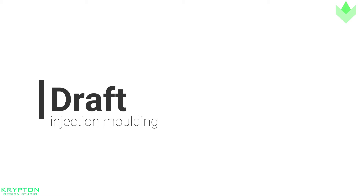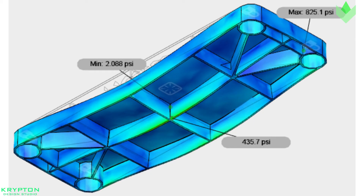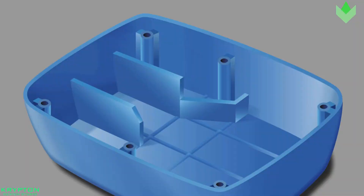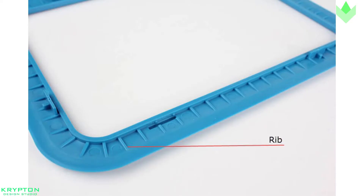Draft. Most injection molded plastic parts include features such as outside walls and internal ribs that are formed by opposing surfaces of tool metal inside the closed mold.